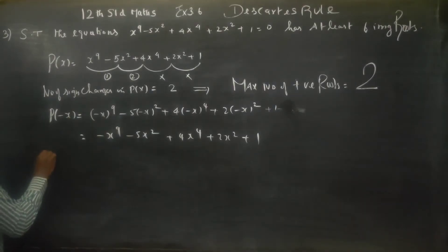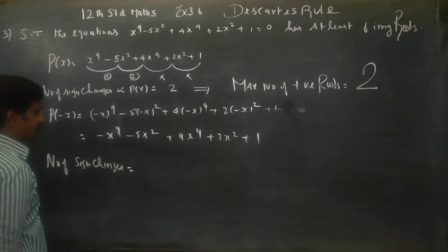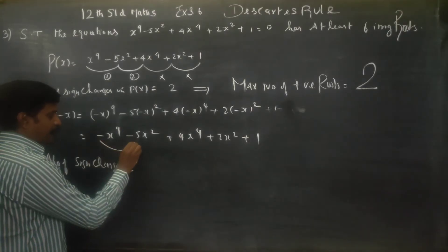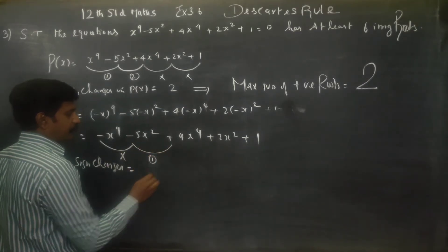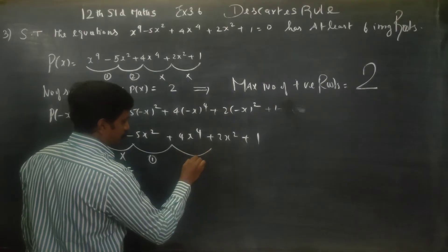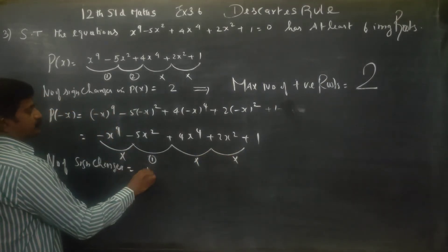We will check the number of sign changes. Number of sign changes is negative to negative, no change. Negative to positive, one change, right? Positive to positive, no change. Positive to positive, no change. Therefore, just one change.